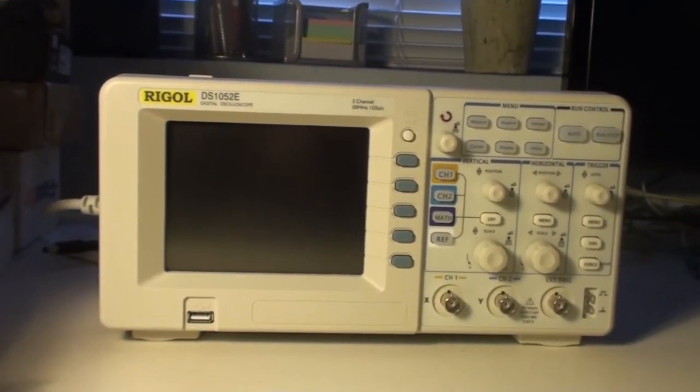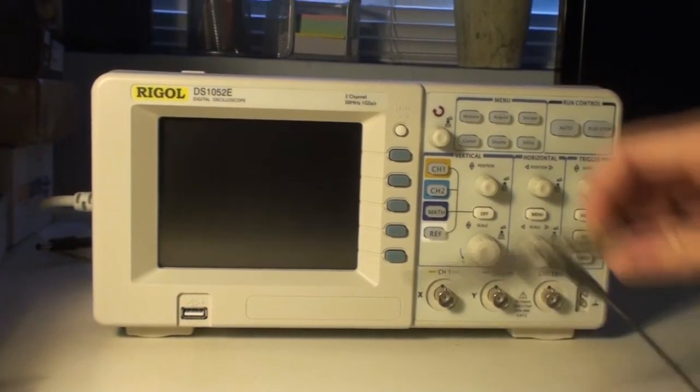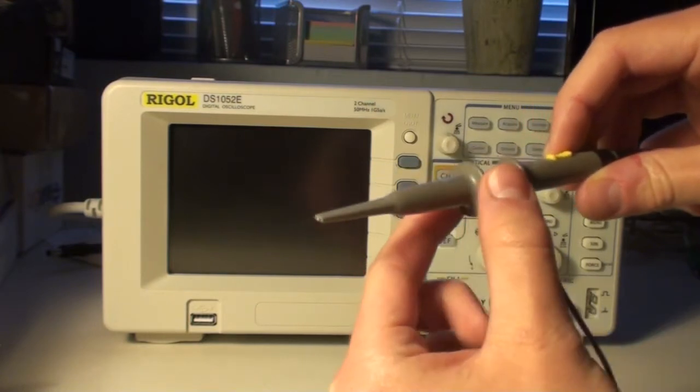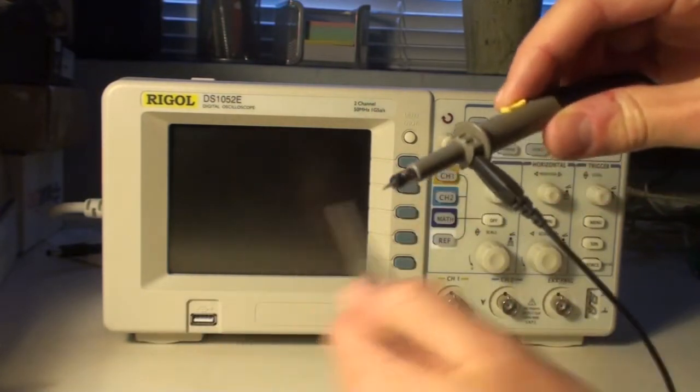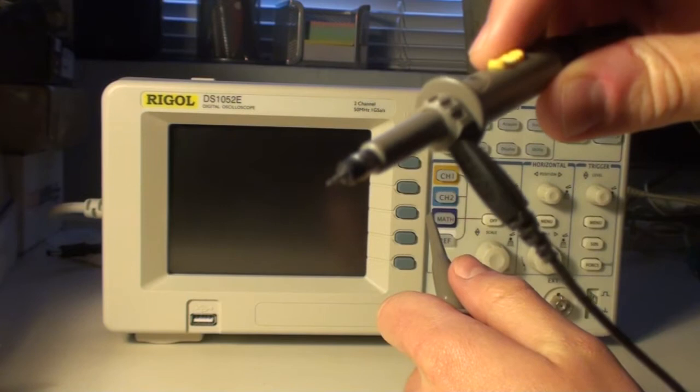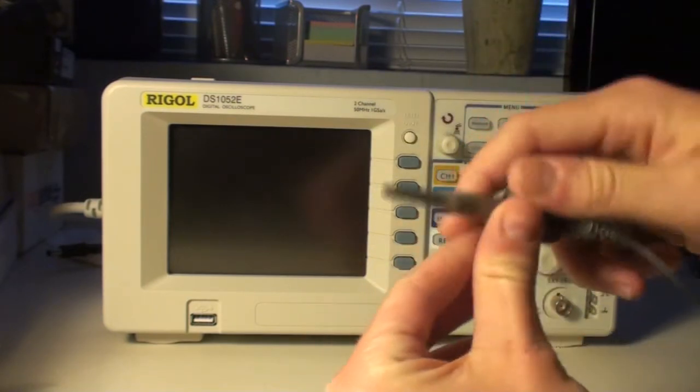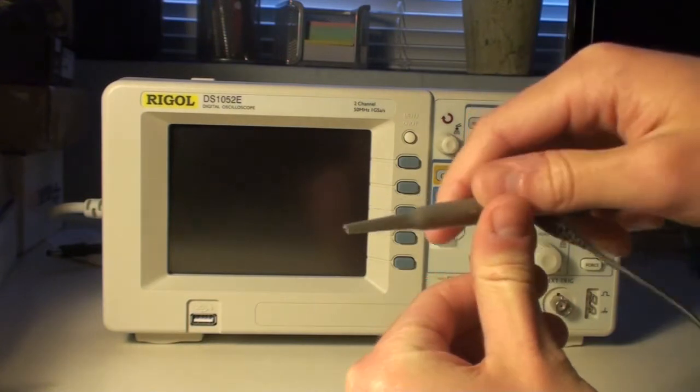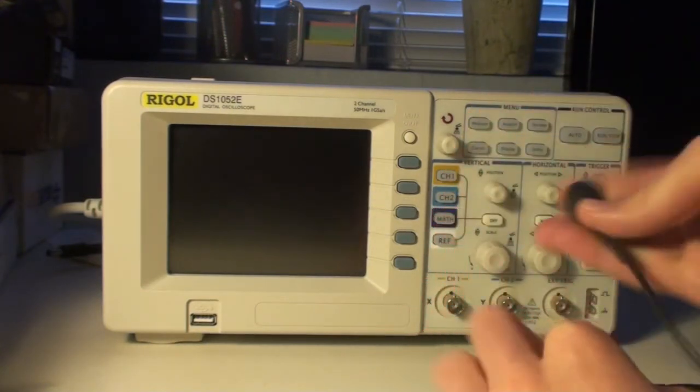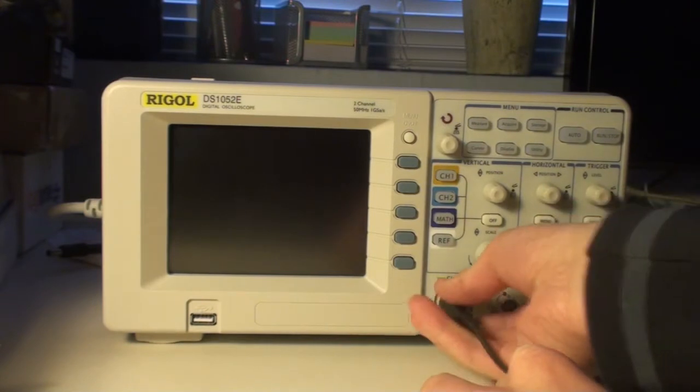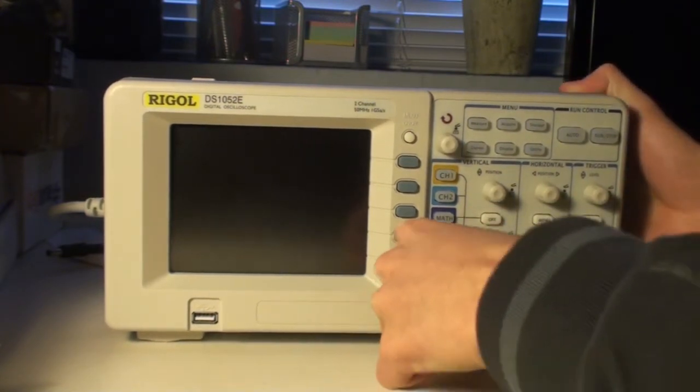The oscilloscope comes with two probes. These are regular probes where the tip can be removed, and then you have a pogo pin for probing, or the normal tip which you can attach. The probes connect directly into the BNC connector, and then you are ready to measure.